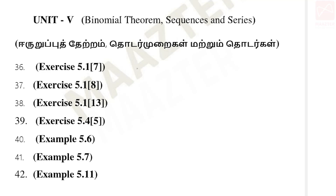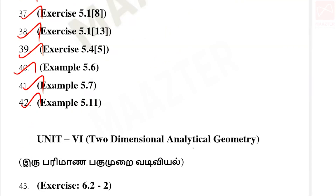Then Unit 5: Binomial Theorem, Sequence and Series. In this unit, Exercise 5.1: 7th sum, 8th sum, 13th sum and Exercise 5.4: 5th sum. And examples: Example 5.6, 5.7, 5.11.